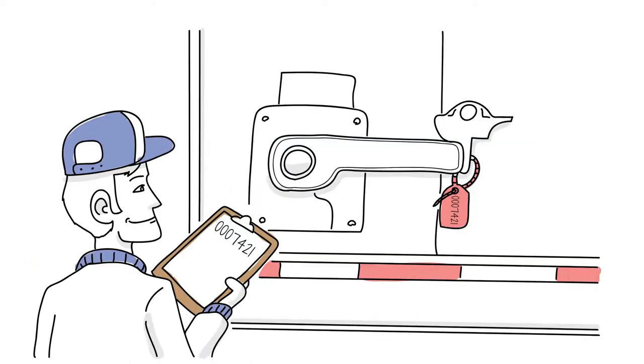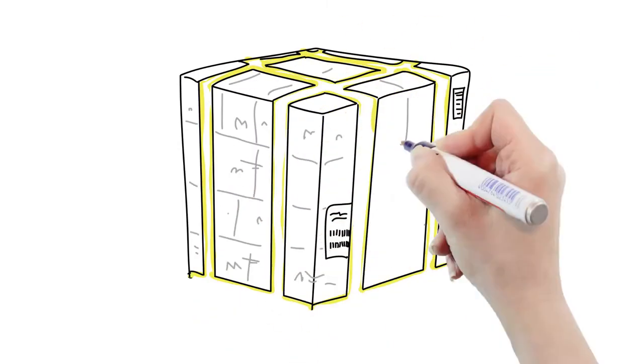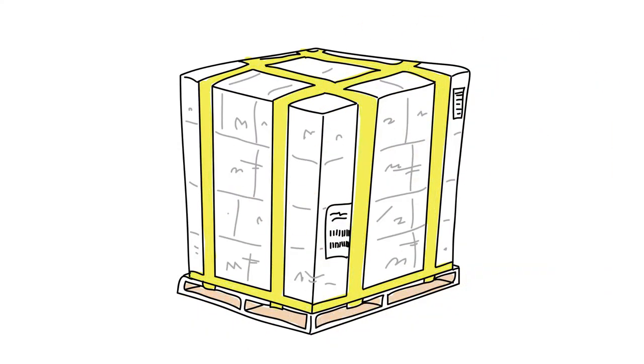Part loads: As with full loads, all access doors of the load compartment are sealed with matching seal numbers recorded on the shipping documents. If seals are not used, all pallets must be secured with tamper-evident tape.